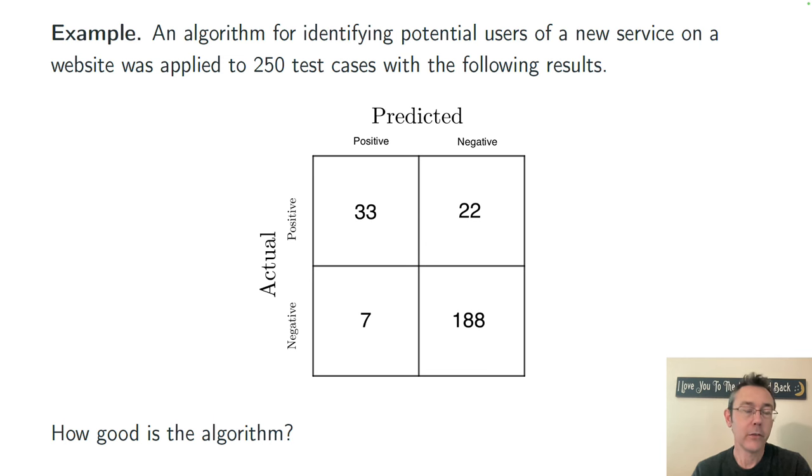The way to read this is as counts. So I have in the upper left hand corner, 33 people that use the service that I predicted would use the service. While in the upper right hand corner, I have 22 people that use the service that I predicted would not use the service.